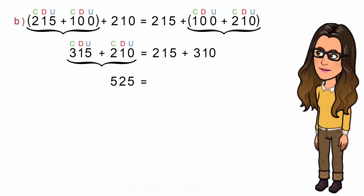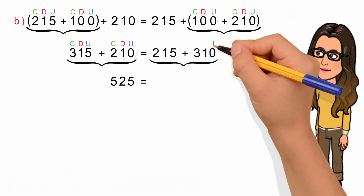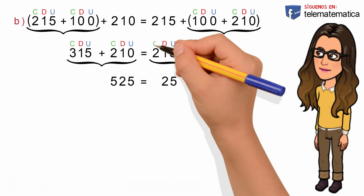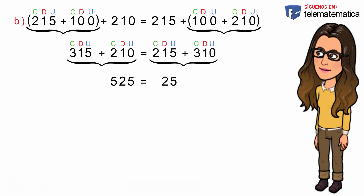Y esto va a ser igual: identificamos la cifra de la unidad y sumamos, 5 más 0 es igual a 5. Identificamos la cifra de la decena y sumamos: 1 más 1 es igual a 2. E identificamos la cifra de la centena y sumamos: 2 más 3 es igual a 5, y nos quedaría 525. También podemos observar que ambos resultados son iguales, por lo que podemos concluir que no importa cómo se agrupen los sumandos, el resultado no va a variar.